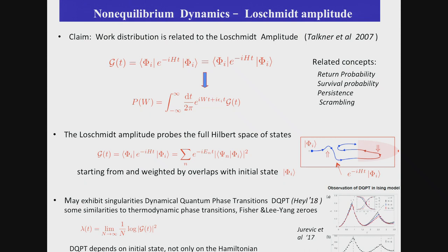Here I simply define the Loschmidt echo as the overlap probability between the final state, which means phi i, which has been evolved by e minus iHt, and the initial state. And one can show easily that the work probability is just a Fourier transform of the Loschmidt distribution. And what makes it non-equilibrium interesting and hard is that unlike thermodynamics, it doesn't probe only ground state and low-lying state. It probes the full Hilbert space.